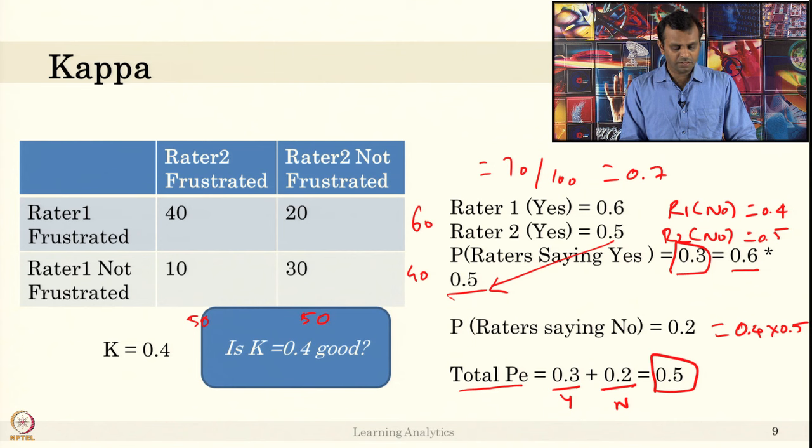There is no answer, no exact answer to this, but it depends on domain. The K value good or bad can be inferred. In this scenario, that is the both raters will agree will be 0.4. That is not a so good score for inter-rater agreement reliability.